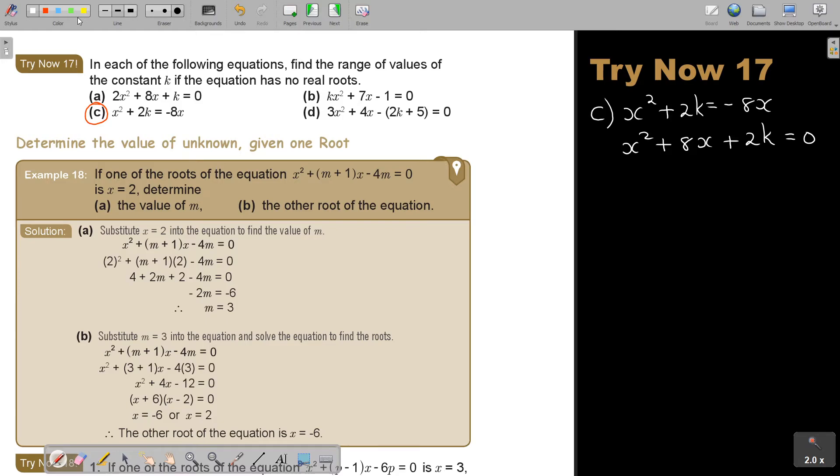And now I read: in each of the following equations, find the range. So it's already showing you it's a bigger or smaller. Of values of the constant K if the equation has no real roots. So I can already start by saying the discriminant is smaller than zero.